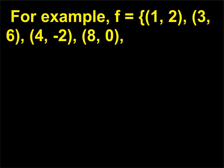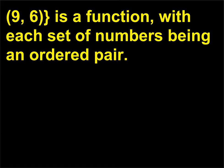F equals {(1,2), (3,6), (4,-2), (8,0), (9,6)} is a function, with each set of numbers being an ordered pair.